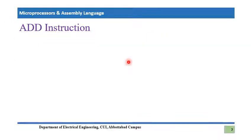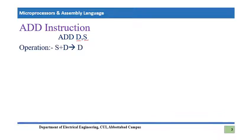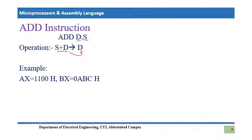The very first instruction we are going to cover in this lecture is the ADD instruction. Its format is: ADD D, S — where D is the destination operand and S is the source operand. The source and destination operands are added together, and the result is stored in the destination.